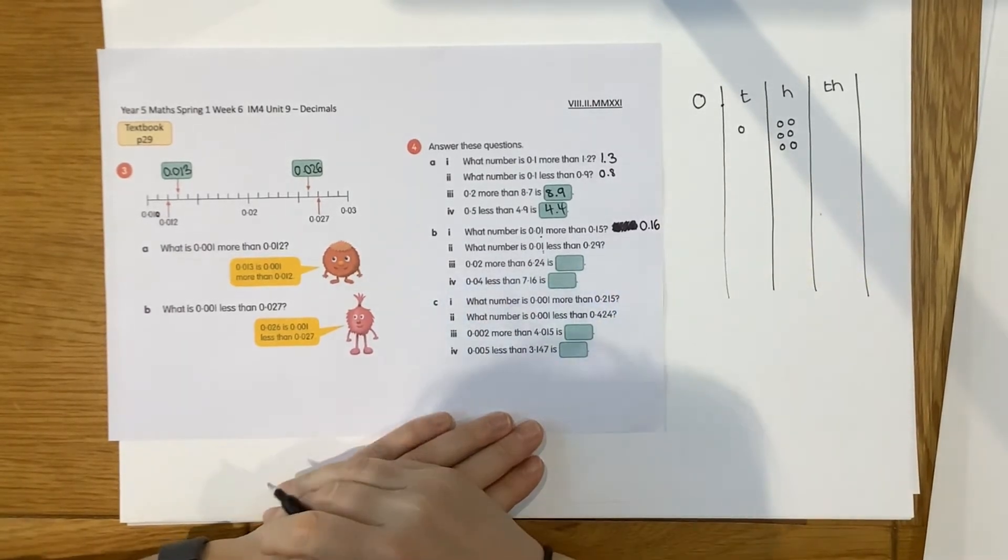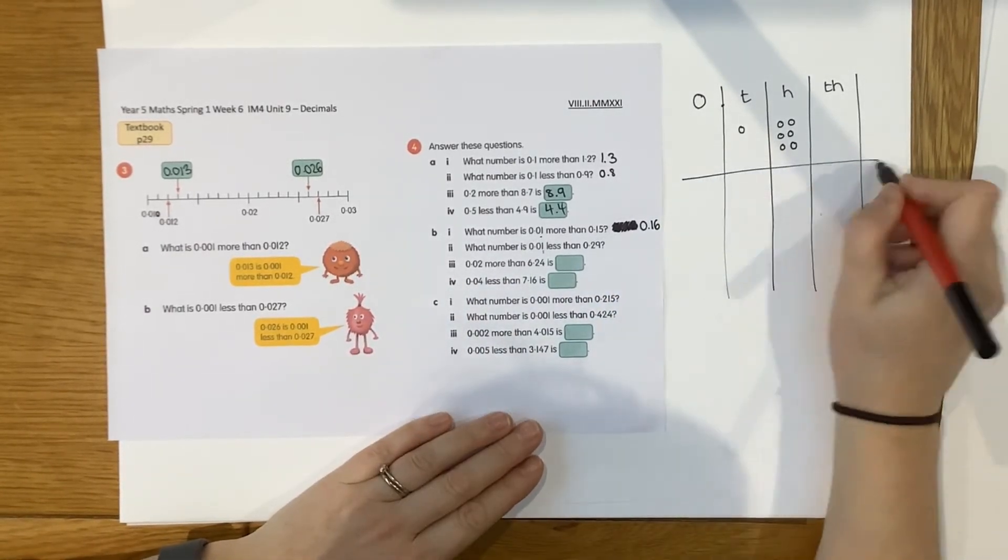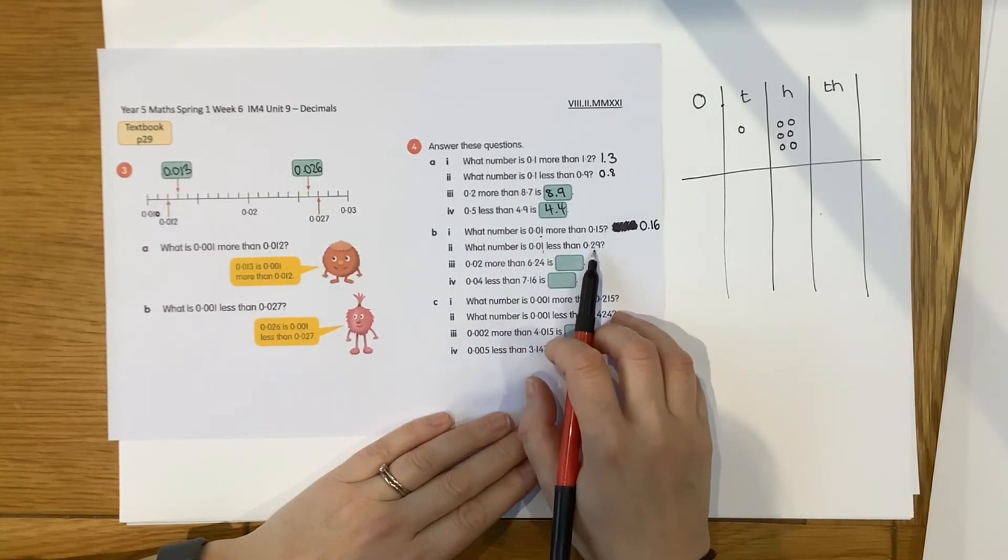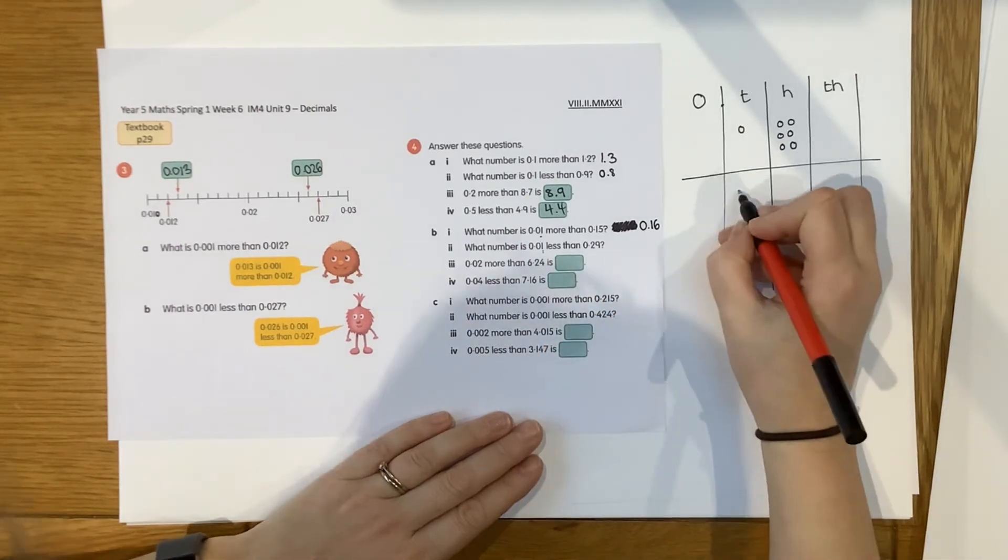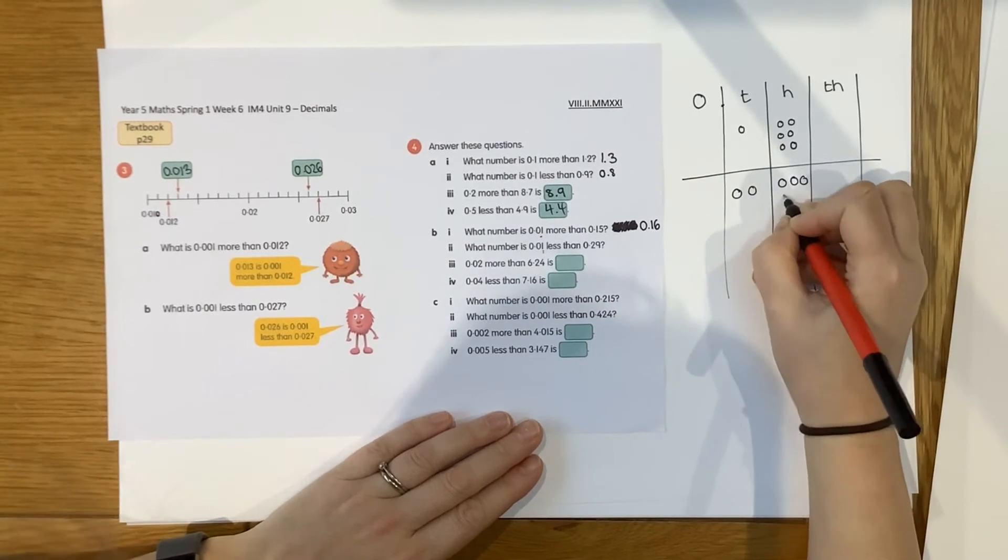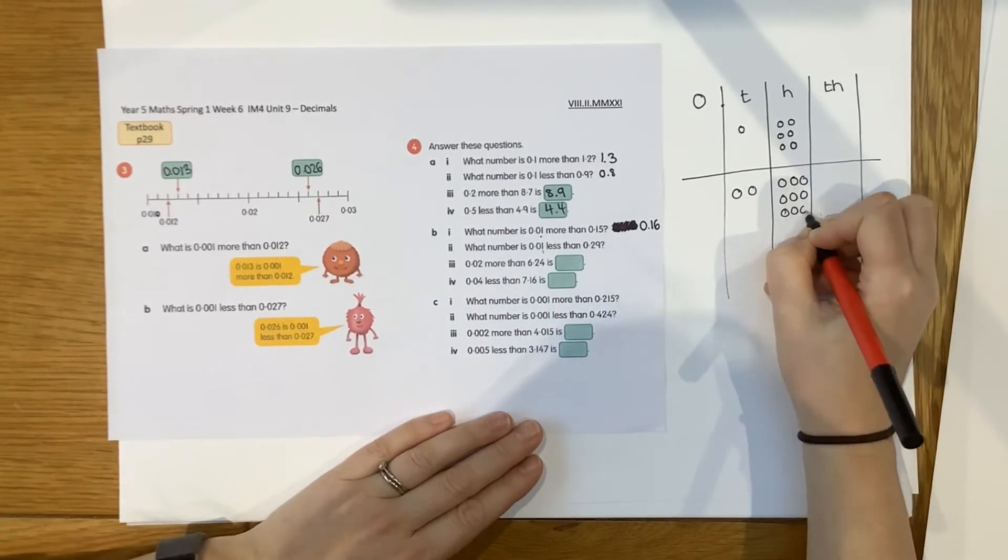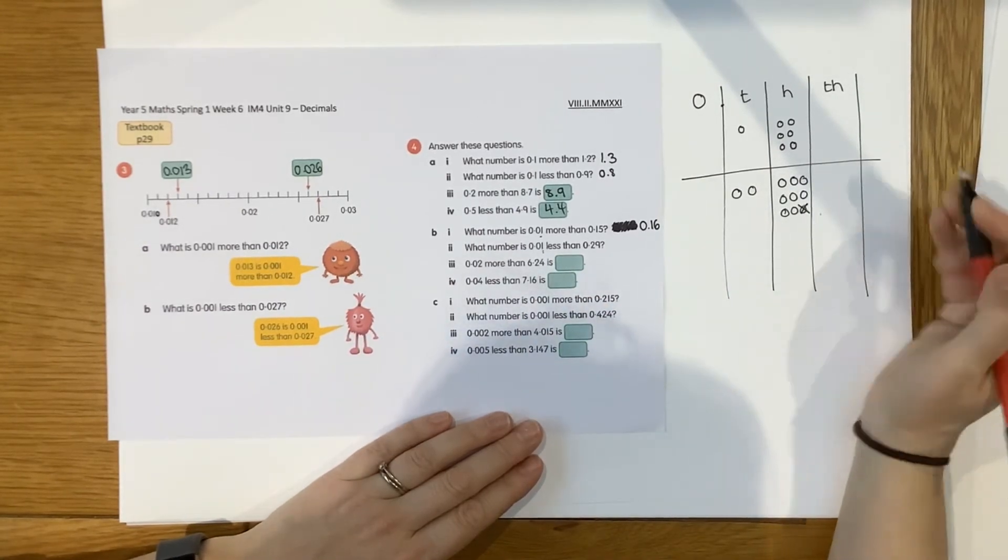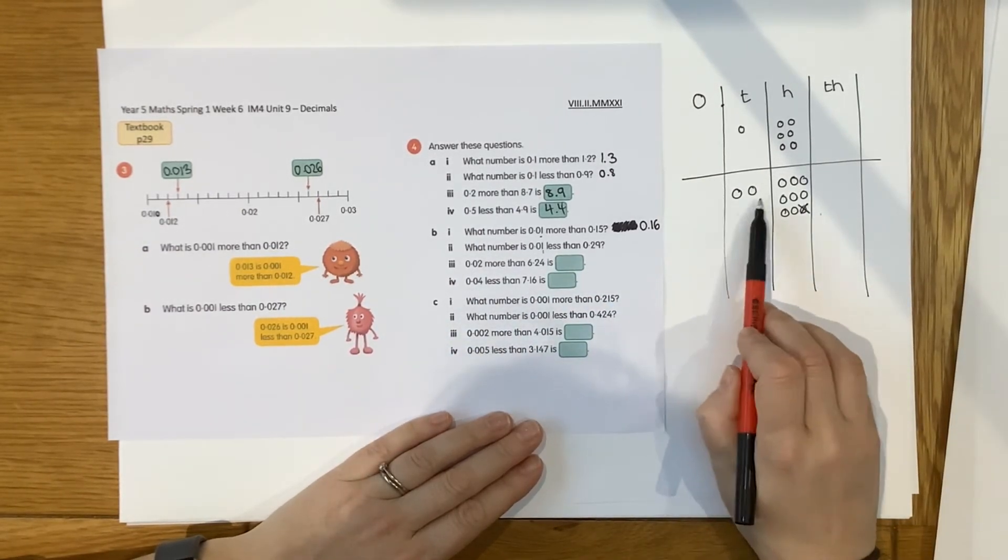Okay, let's have a look at the next one. What number is 0.01 less than 0.29? Well, let's build 0.29. There's no whole ones. 2 tenths and 9 hundredths. And we've got to go 1 hundredth less than. So I'm going to cross one out. So that leaves us with 0.28.